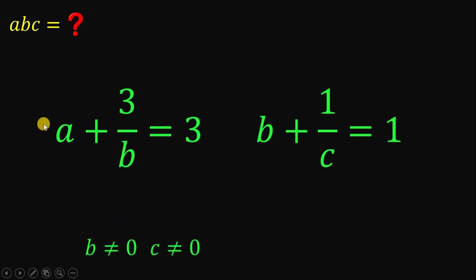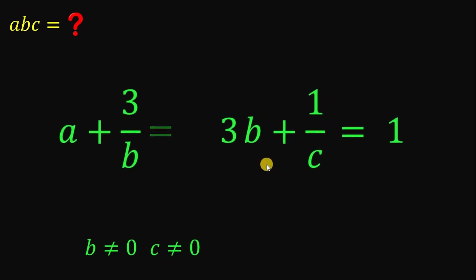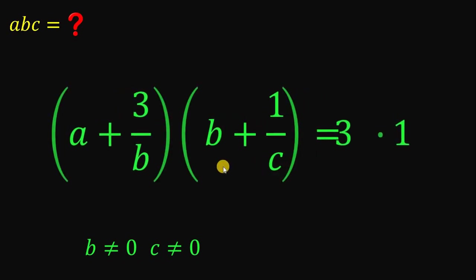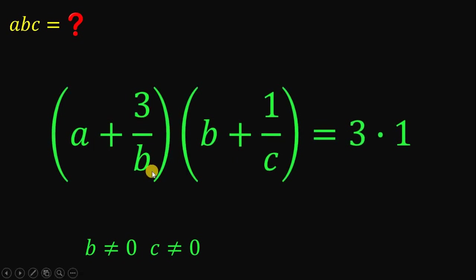Since our goal is to find the product of a, b, and c, and we have a and b in the equations, what we're going to do is multiply these two equations together. So we have: a plus 3 over b, times b plus 1 over c, equals 3 times 1. Let's see what will happen.